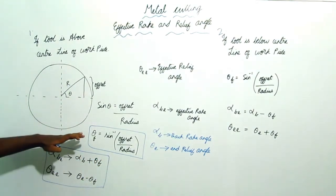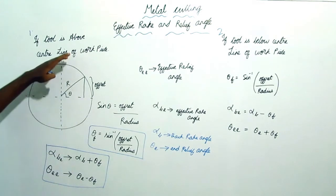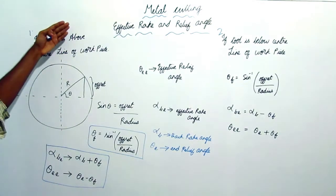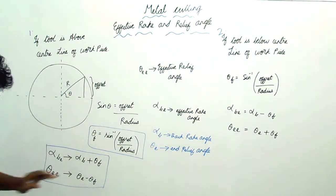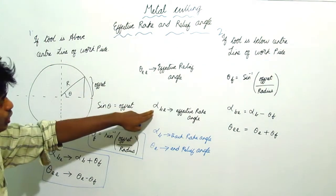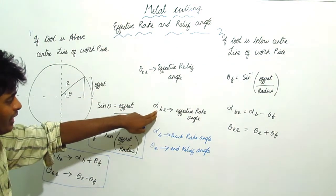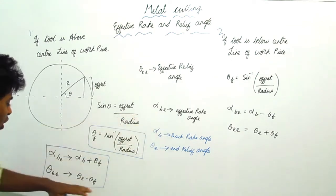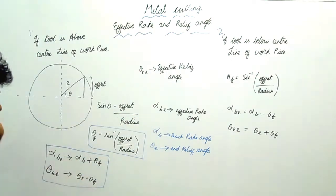To summarize condition one: when the tool is above the center line of the workpiece, you add θ_f to the rake angle. But for the Relief angle, you subtract θ_f.